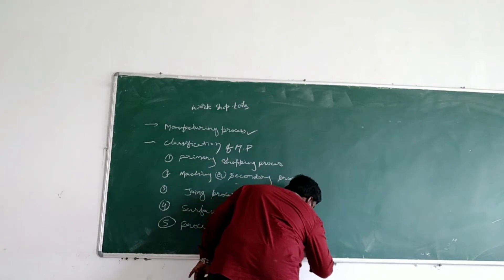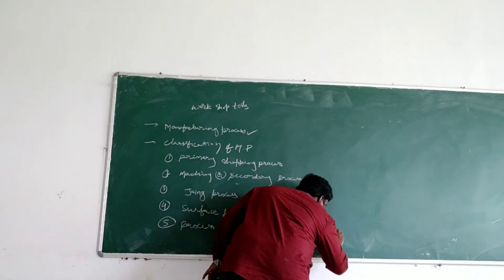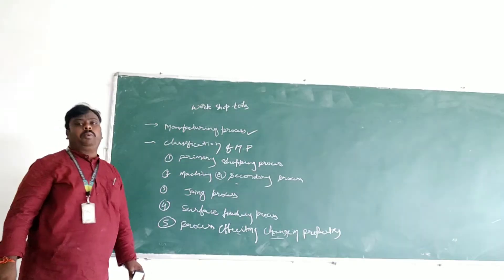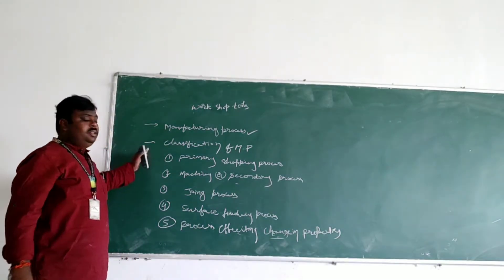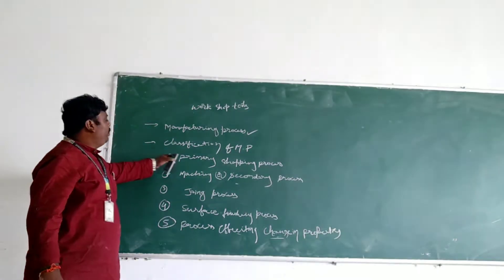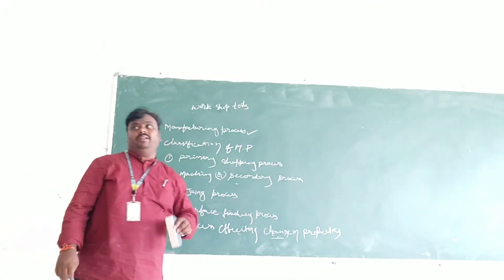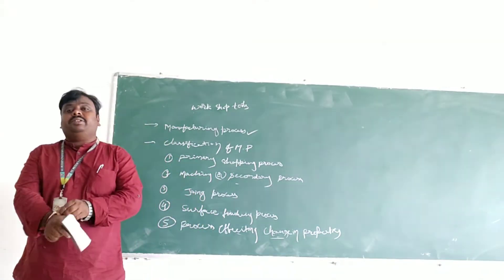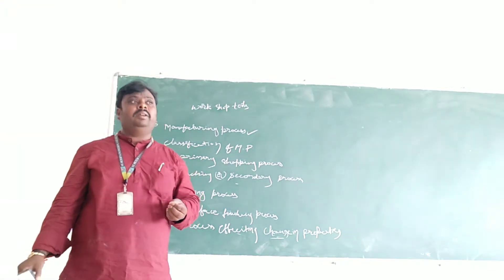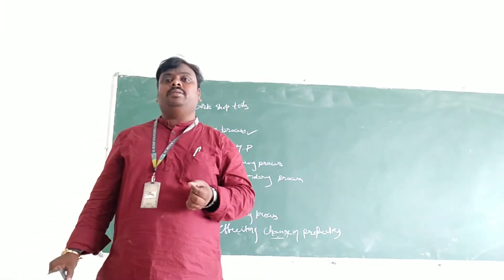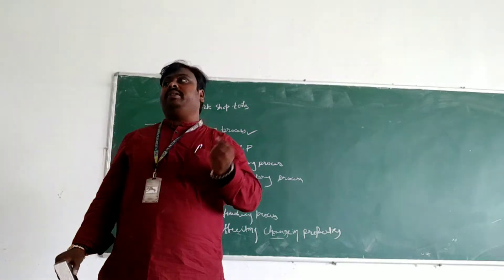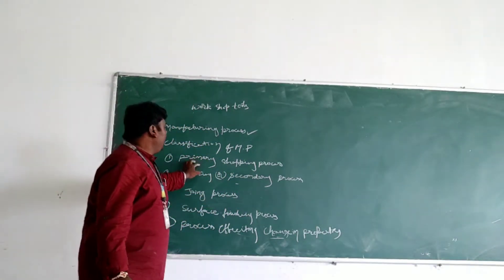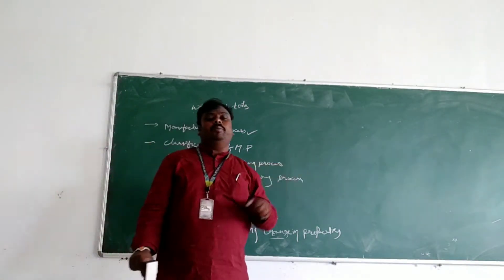So one of the properties are there - material properties. Here we can change the properties. Now let us discuss primary shaping operation. Primary shaping operation is nothing but when you take the raw material and prepare it with semi-finishing work - that is nothing but primary shaping operation.